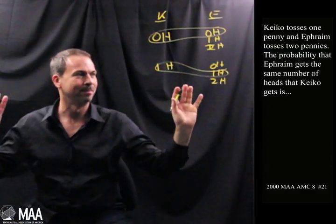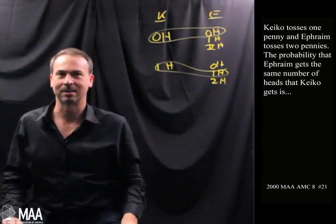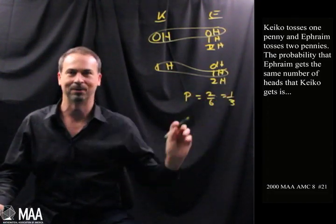So I'm just thinking here. That's it. Out of the six possibilities, it looks like they have the same number of heads two times. The answer must be probability is two-sixths or one-third.